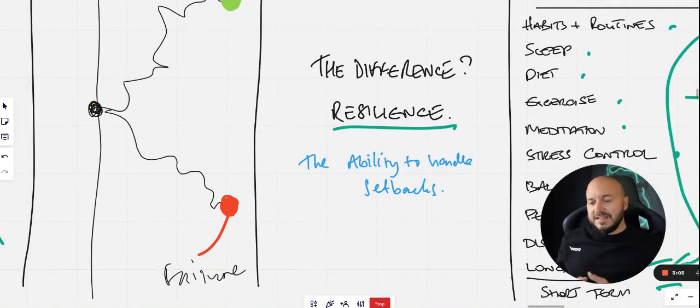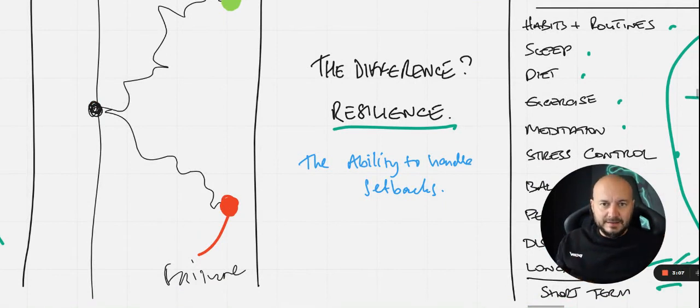So as you can see here, same event happens. Trader A ends up succeeding overall and trader B ends in failure. And what's the difference? The difference here is that resilience word. Now, resilience is defined by the ability to handle setbacks or to bounce back.